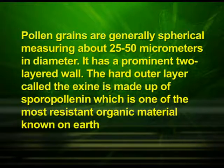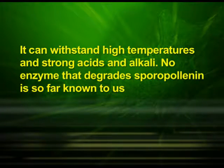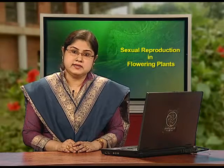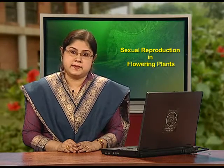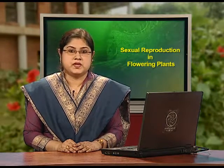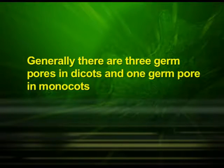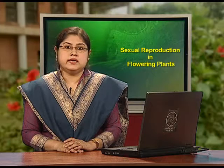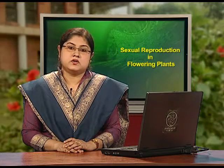The pollen grain has a prominent two-layered wall. The hard outer layer called the exine is made up of sporopollenin, which is one of the most resistant organic materials known on earth. It can withstand high temperatures and strong acids and alkali. No enzyme that degrades sporopollenin is so far known to us. At certain places the exine is absent or very thin, giving an appearance of a pore called the germ pore. Generally there are three germ pores in dicots and one germ pore in monocots.